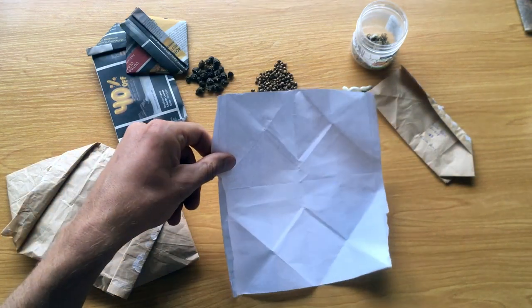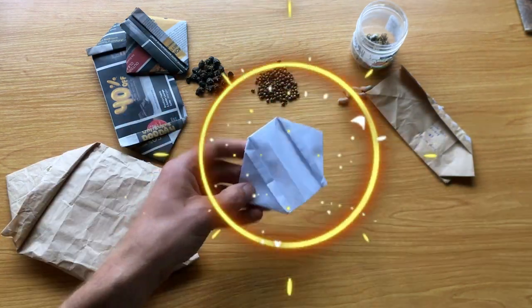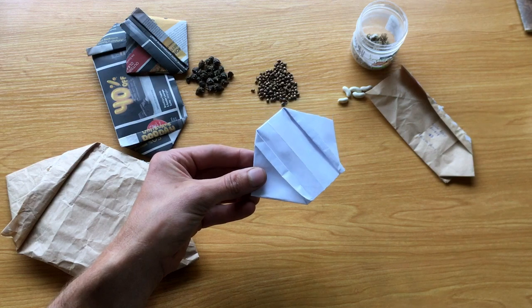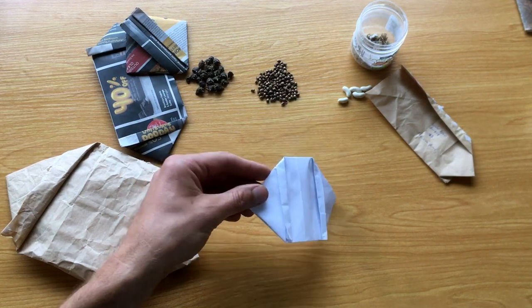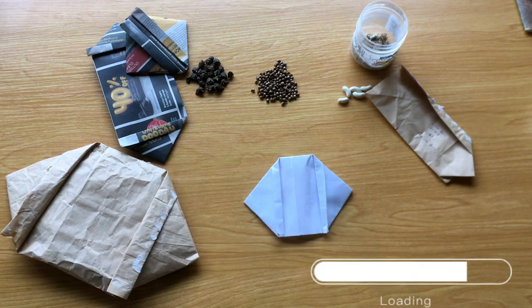We'll go from a simple piece of paper like you can see here to this. A simple seed bag made out of a single sheet of paper. Let me show you how to make one.